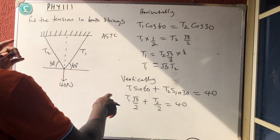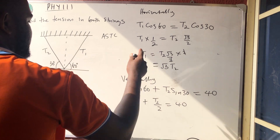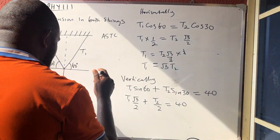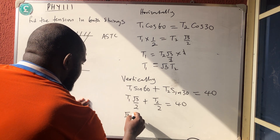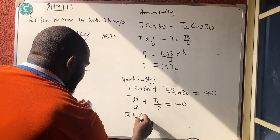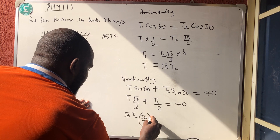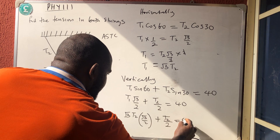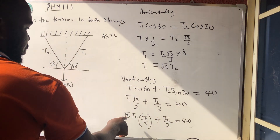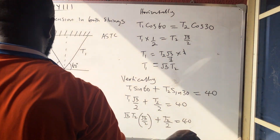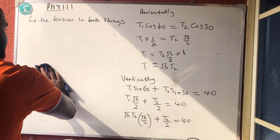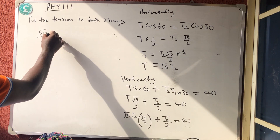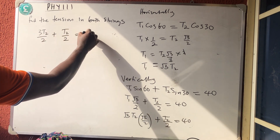Since T1 = √3 · T2, substituting gives: √3 · T2 × (√3/2) + T2/2 = 40. Simplifying: 3T2/2 + T2/2 = 40.